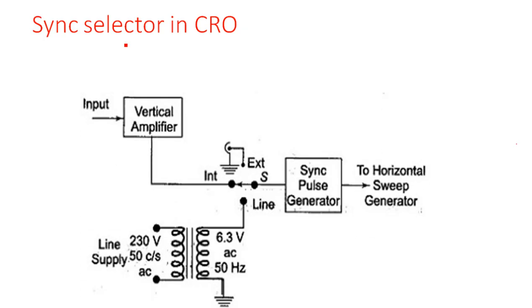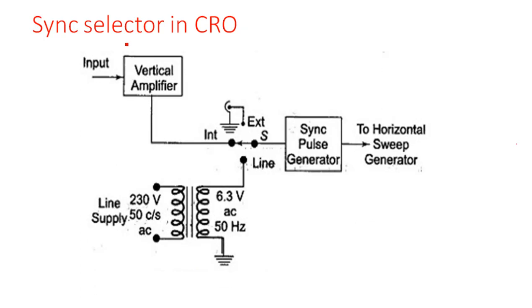In this video I am going to explain sync selector and CRO, followed by sampling oscilloscope. This is the block diagram of synchronous signal generator in CRO. In the internal section, the same similar kind of trigger we generated in the trigger pulse — similarly we will generate the synchronization signal for this CRO sweep.